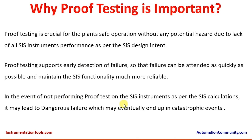In the event of not performing proof testing on SIS instruments as per the SIS calculations, it may lead to dangerous failures which may eventually end up in catastrophic events. For example, due to some reasons the plant is running, instruments cannot be isolated, and the proof test is missed. If there is a demand coming as a safety requirement and the instruments did not work — the pressure sensor which is supposed to sense the pressure and give an indication to the logic solver to give a closure to the final containment valve — and either its electronics or its sensing components like the diaphragm failed, this cannot be detected.